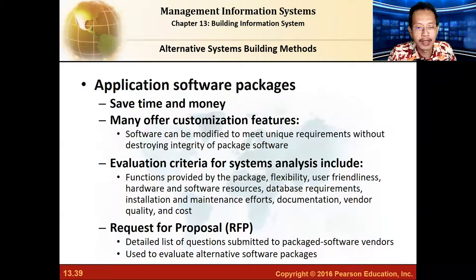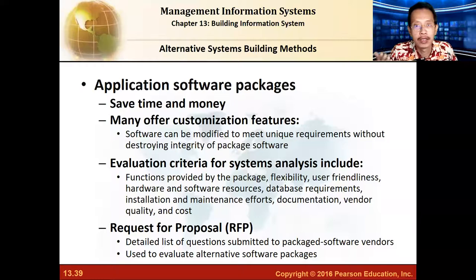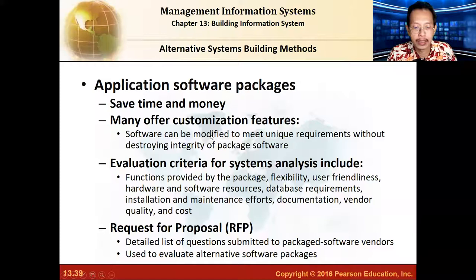Application software packages are applications you buy off the shelf that are already made — like buying Windows, for instance. It saves time and money, it's quick, and it's cheaper because the same system is used by several companies. However, it might not fit your needs: it may have functions you need that it doesn't include, or functions you don't need. The business process in the software might differ from yours, so you may need to customize it — and customization is usually expensive.